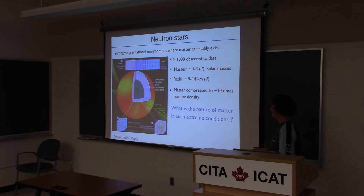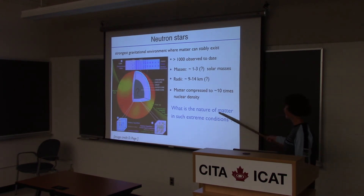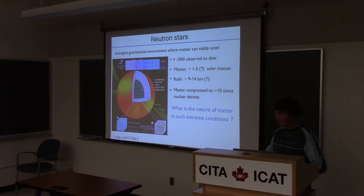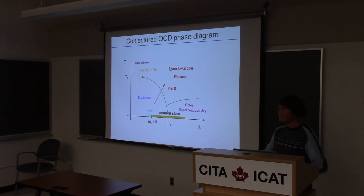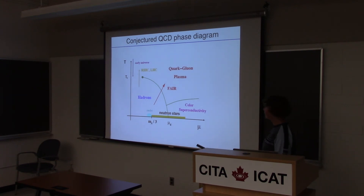No one really knows, because it's just too much of an extrapolation from what we currently know. One of the key questions in physics is what is the nature of matter in such conditions. For neutron stars, they probe an important part of the QCD phase diagram.